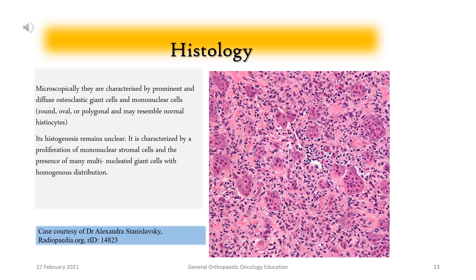Histology: Microscopically, GCTs are characterized by prominent and diffuse osteoclastic giant cells and mononuclear cells — round, oval, or polygonal — which may resemble normal histiocytes. Its histogenesis remains unclear. It is characterized by a proliferation of mononuclear stromal cells and the presence of many multinucleated giant cells with homogenous distribution.